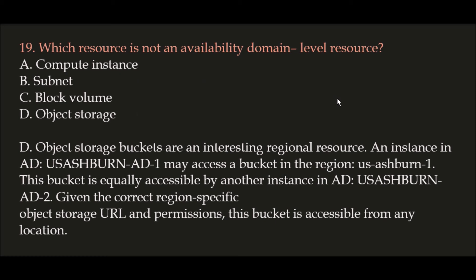Question 19: Which resource is not an availability domain level resource? Option A: Compute Instance, Option B: Subnet, Option C: Block Volume, Option D: Object Storage. The correct answer is Option D, Object Storage. Object storage buckets are a regional resource — an instance in AD USA-SH1-AD1 may access a bucket in region USA-SH1, and that bucket is equally accessible by another instance in AD USA-SH1-AD2. Given the correct region-specific object storage URL and permissions, the bucket is accessible from any location.